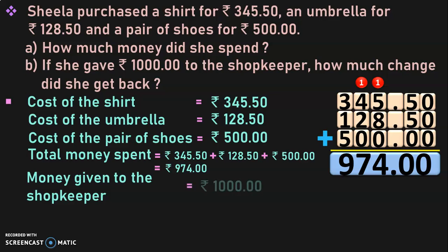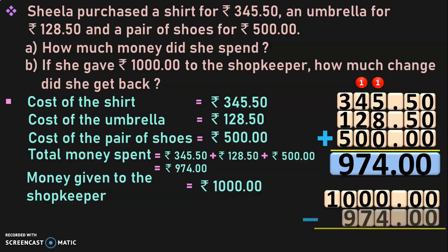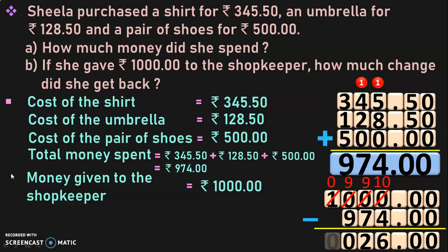She gave Rs. 1,000 to the shopkeeper, so money given = Rs. 1,000. To find the change, subtract 974 from 1,000: 1,000 minus 974. Starting from the paise part, we have 0 minus 4 which cannot be done. Since we have three zeros, we go to the last place value — the 1 — which becomes 0. Regroup: 10 becomes 9 and 10 in the next place, then 9 and 10 again. 10 minus 4 is 6. 9 minus 7 is 2. 9 minus 9 is 0. The difference is Rs. 26.